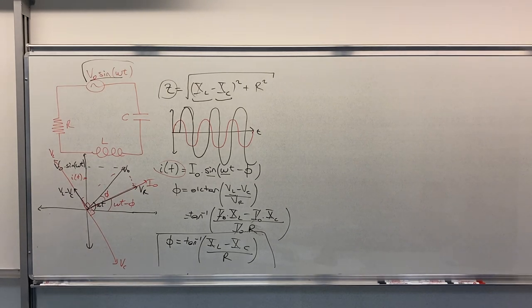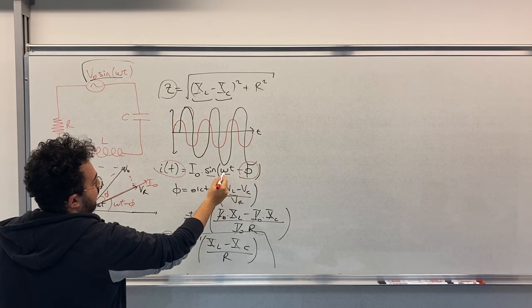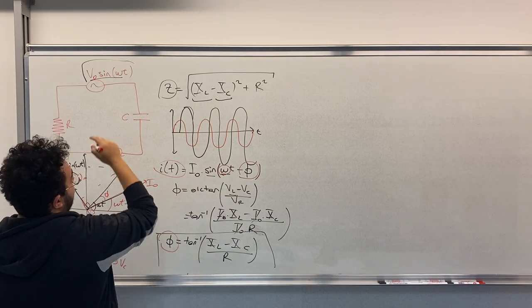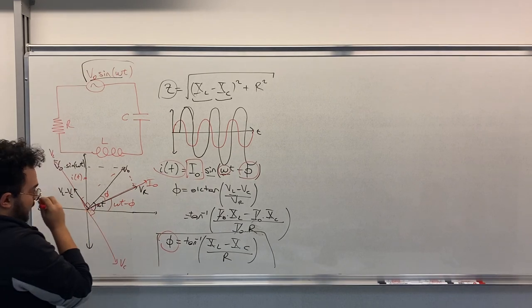Also, we need to find an expression for the current. Now we know this. We found this one. We are given omega in the question. All we need to find is I0, the magnitude.